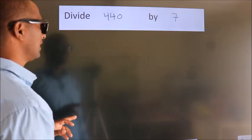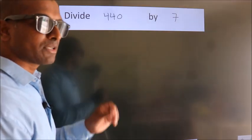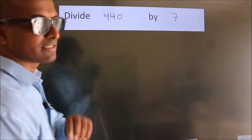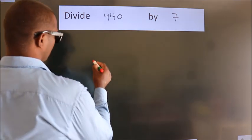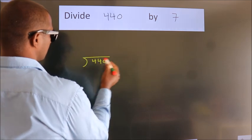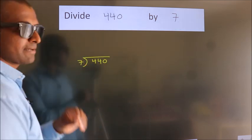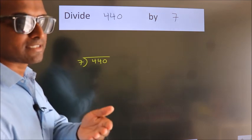Divide 440 by 7. To do this division, we should frame it in this way: 440 here, 7 here. This is your step 1. Next,